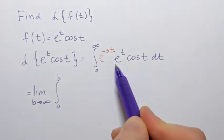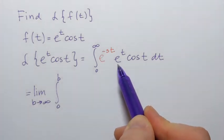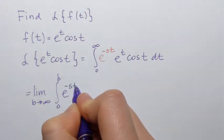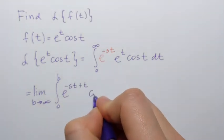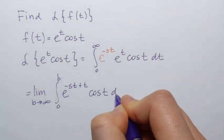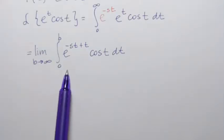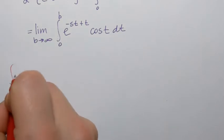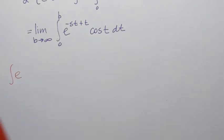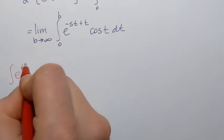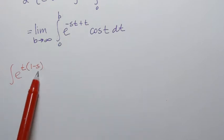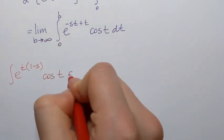I can simplify the expression inside — the two bases can be combined. It's going to be e to the power negative s·t plus t, times cosine of t dt. I'll focus on just the integral as scratch work. I'm going to evaluate the integral of e to the power t times (1 minus s) — if I factor out t, that's what I obtain — times cosine of t dt.